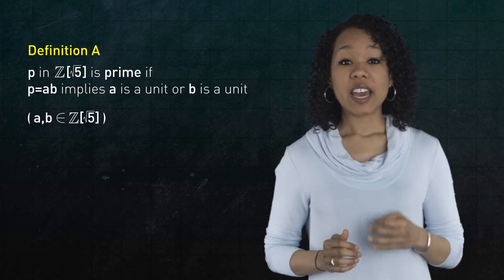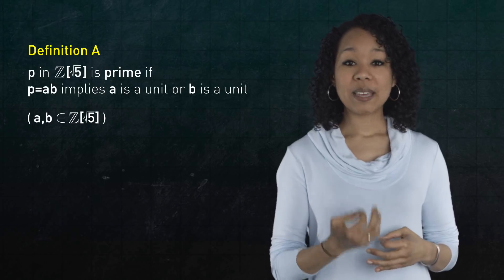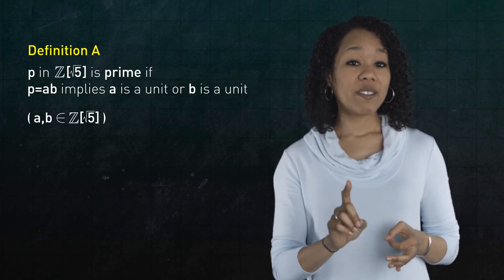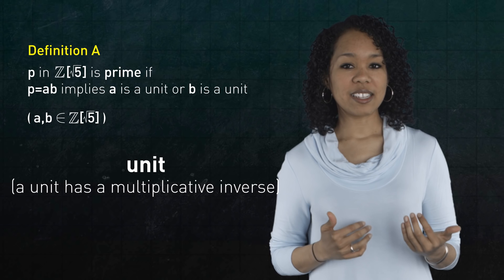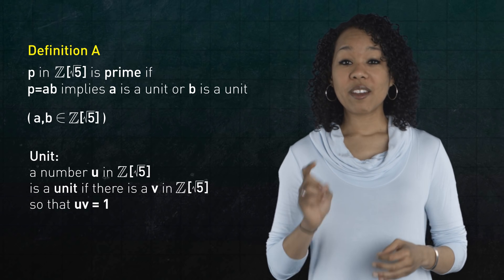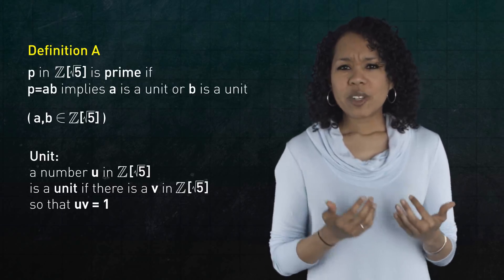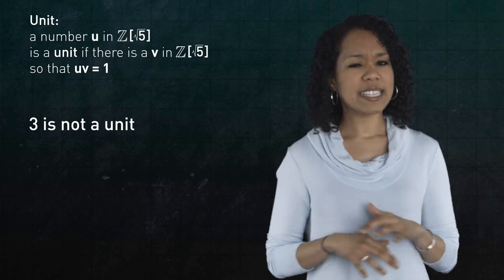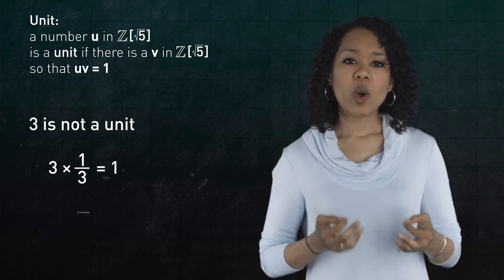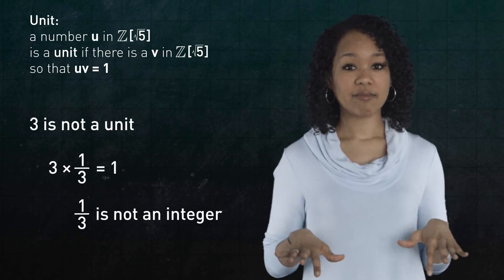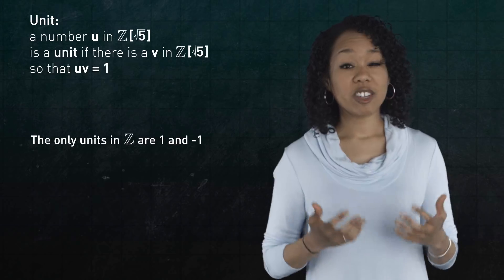Here's the new definition a. A number p in Z adjoined root 5 is prime if whenever you write p as a product of two numbers, then one of them is a unit. A unit is a word that means has a multiplicative inverse. That is, a number u is a unit if there exists some other number v so that u times v is one. For example, in the usual integers, 3 is not a unit. It does not have a multiplicative inverse. Okay, yes, 3 times a third is equal to 1. But one third is not an integer, so that doesn't count. In fact, the only units in Z are 1 and negative 1.